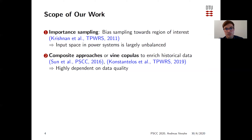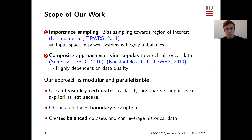It can be quite challenging to identify the secure operating regions. The second line of work uses composite approaches or vine copulas to enrich historical data, but this is highly dependent on the quality of historical data available. The approach we propose in this work is modular and parallelizable: it uses infeasibility certificates to classify large parts of the input space a priori as not secure, obtains a detailed boundary description, creates balanced data sets, and can also utilize historical data.